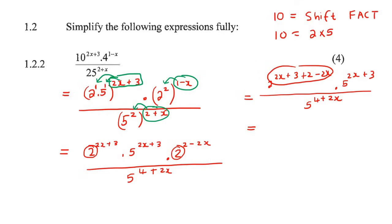All right. So now what I'm going to do is I'm just going to combine all of this. So that's going to become 2 to the power of, oh, the 2x and the minus 2x, they would cancel. So we just end up with 2 to the 5, and then we still have the 5 to the 2x plus 3. And then at the bottom, we still have the 5 and then 4 plus 2x.